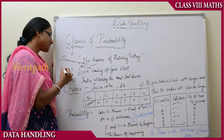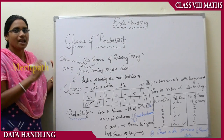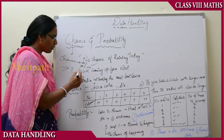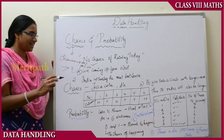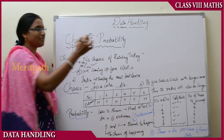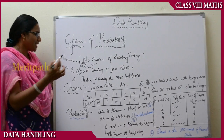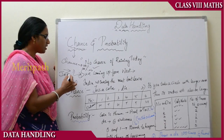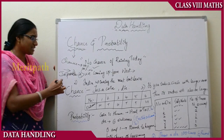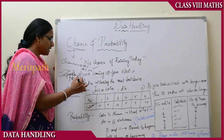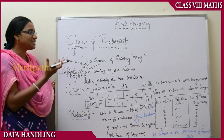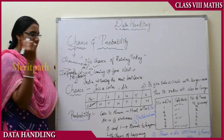But a statement like 'the sun rises in the west' is an impossible situation, because the sun never rises in the west — it always rises in the east. Such impossible statements have no hope of being true; they are false statements. There is no chance for these statements to happen. Therefore, the probability or chance for such impossible statements is zero.